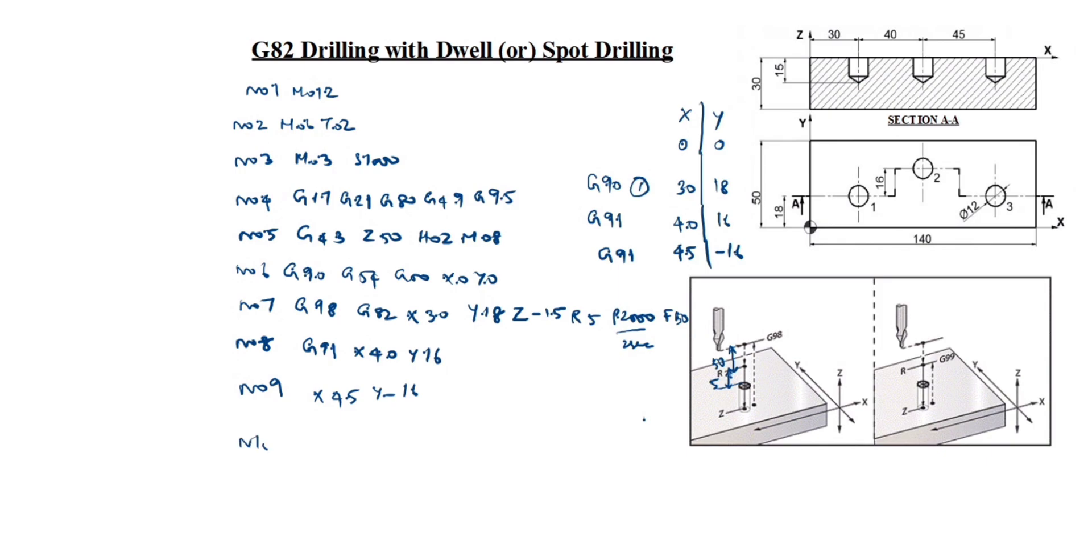Next N10. N10 is G80, canned cycle cancel. Z50, so the tool goes above, Z50. N11 G90 G00 X0 Y0, the tool moves here. N12 M05, spindle off. N13 M09, coolant off. N14 M30, end of the program and rewind.